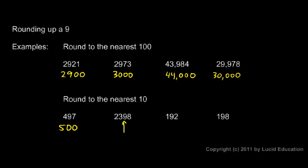Here, 2398. We look at the tens place. The next digit is an 8, so we round up.